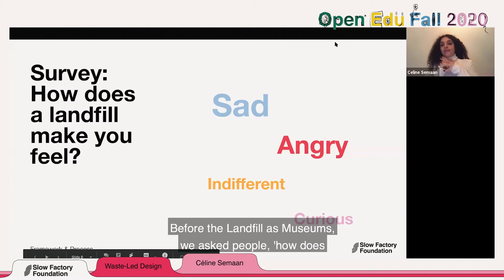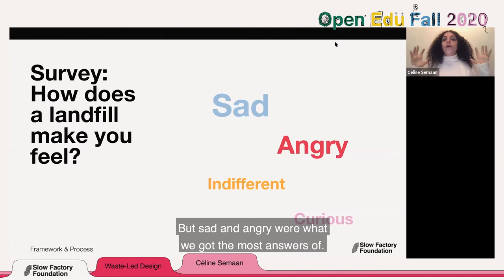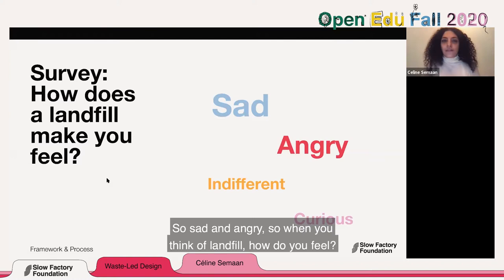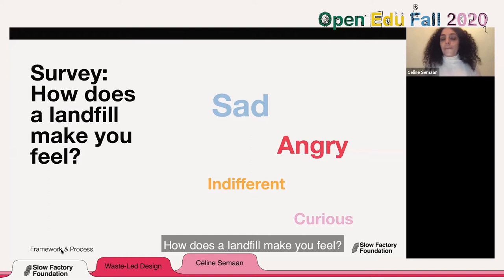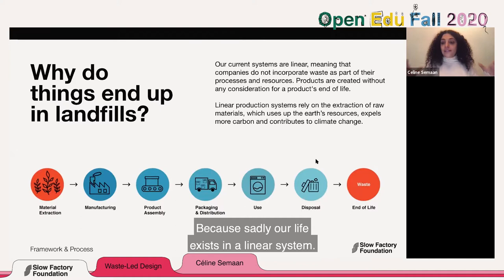Before landfill as museums, we asked people how a landfill makes them feel. A lot of people said sad, angry, indifferent, or curious — but sad and angry were the most common answers. So we want to answer: why do things end up in a landfill? Why didn't we design a better system yet? Because sadly, our life exists in a linear system, adopted by the framework of European philosophies — we are born, we live, and then we die. And this is how we produce things: we create something, use it, and discard it.